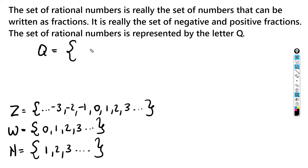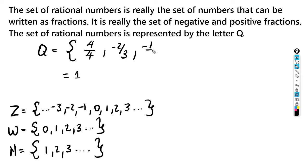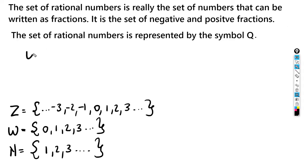Q, the set of rational numbers, includes all numbers that are fractions. For example: 4/4 is a fraction and equals 1, so it's clearly in the set. Other examples include -2/3, -1/2, 2/5, and 6/11 — these are all in the set.